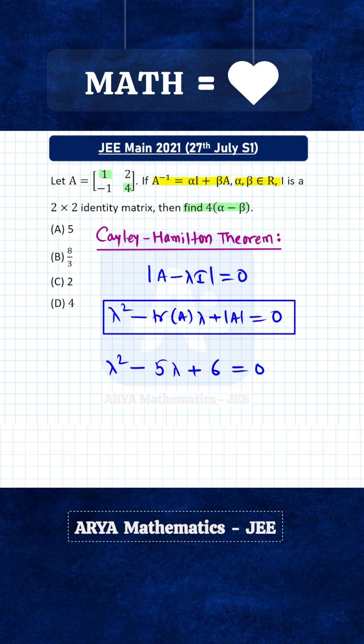Using the Cayley-Hamilton theorem, in place of λ we write A. So we get A² - 5A + 6I = 0. Let's call this equation 1.